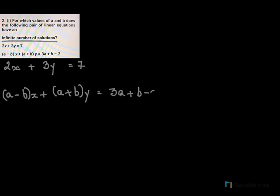So my equation 1 is 2x plus 3y equal to 7. And then I have A minus B x plus A plus B y equal to 3a plus B minus 2.